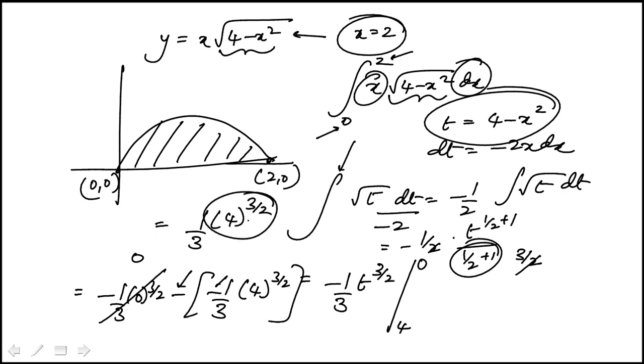This number, you can take the square root of 4 first, 4 to the half and then cube, but that's 2. 2 cubed is 8, so this becomes 8 over 3, which is answer choice B.